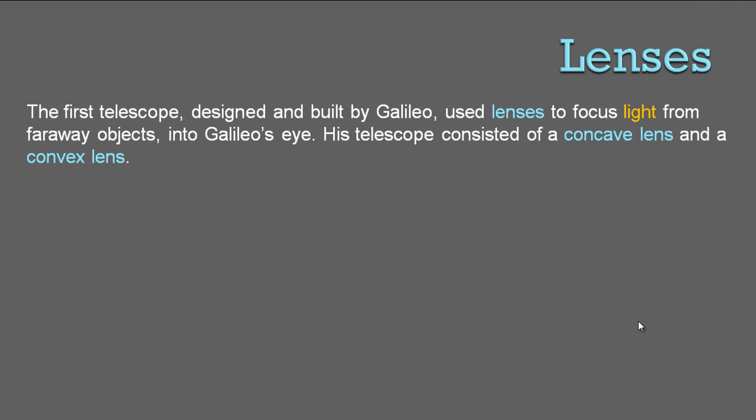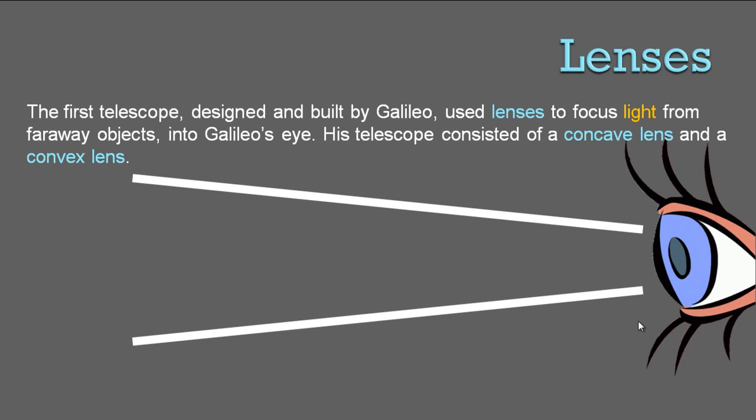So lenses — the first telescope designed and built by Galileo Galilei used lenses to focus light from far away objects into Galileo's eye. His telescope consisted of a concave lens and a convex lens, and looks something like this.